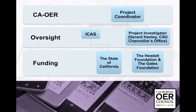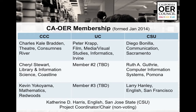The structure of the project goes through the project coordinator and the nine different people on the council itself. Oversight is through ICAS and the project investigator Jerry Hanley from the CSU Chancellor's Office, with funding from the State of California, the Hewlett Foundation, and the Gates Foundation. Membership formed in January 2014 consisted of three members each from the California Community Colleges, the UCs, and the California State Universities, serving one-year appointments.